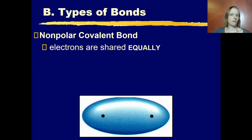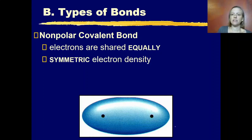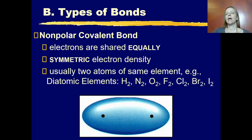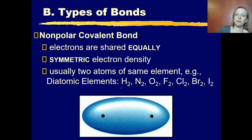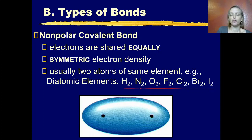The next kind is the purely covalent bond — the nonpolar covalent bond — where electrons are shared equally. The electron density is symmetric, with electrons spending an equal amount of time on each half of the molecule. We usually see this when two atoms of the same element bond together. This is most common with the seven diatomic elements, which you need to memorize: hydrogen, nitrogen, oxygen, fluorine, chlorine, bromine, and iodine.